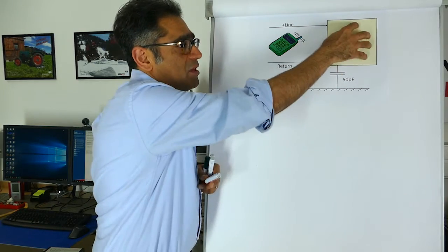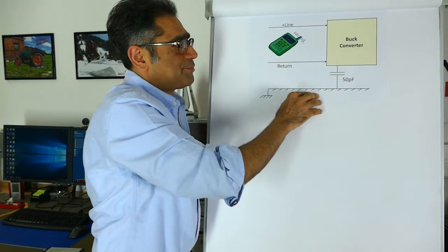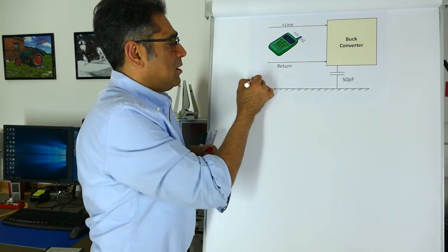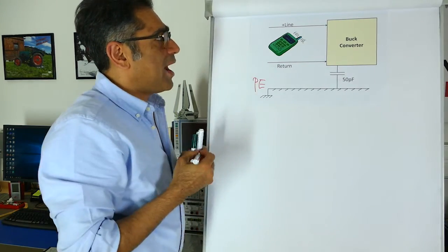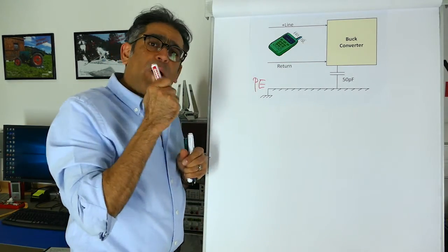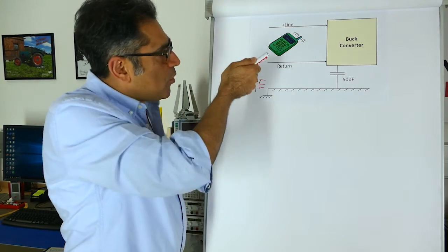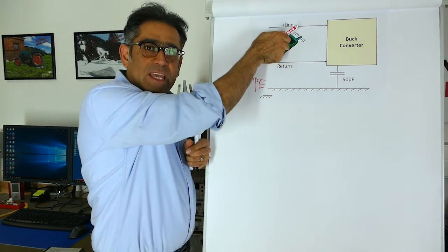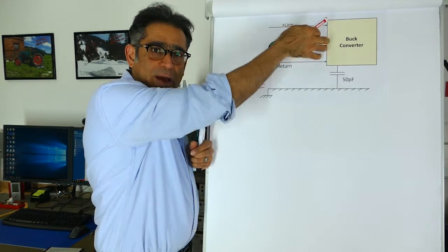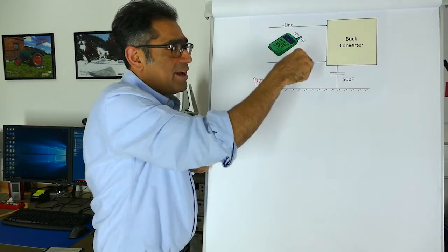So I've got a little bit of capacitance between the buck converter and the chassis. We call this protective earth. Now imagine I get a mobile phone and I put my mobile phone on top of the two cables going into the power supply, so both line and return.